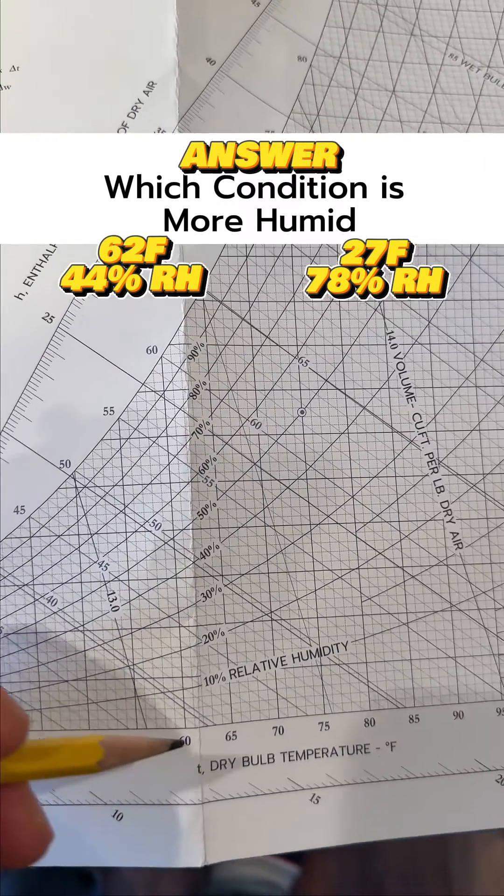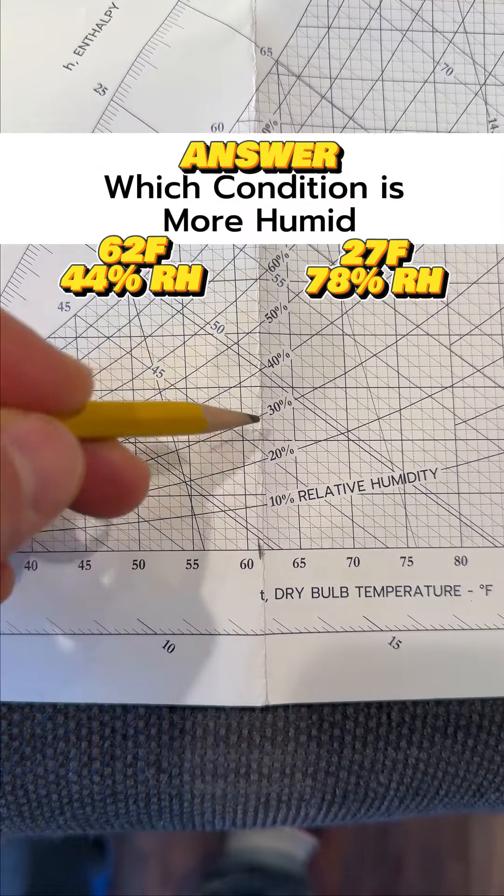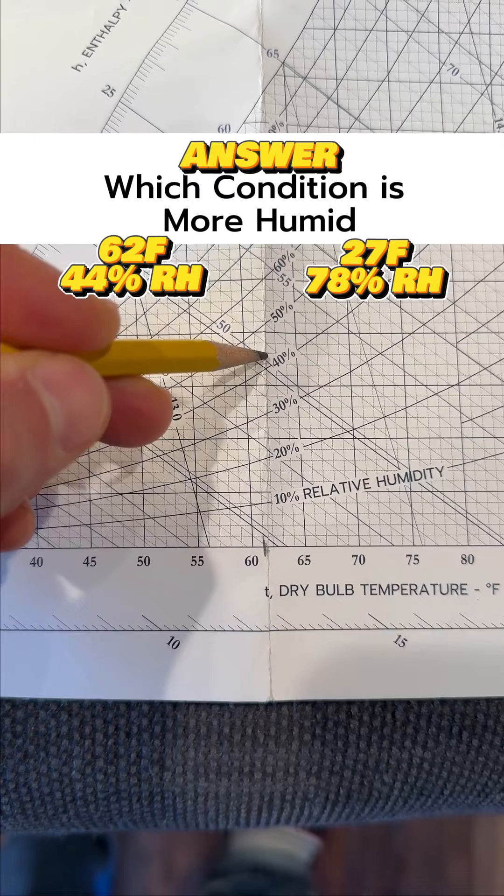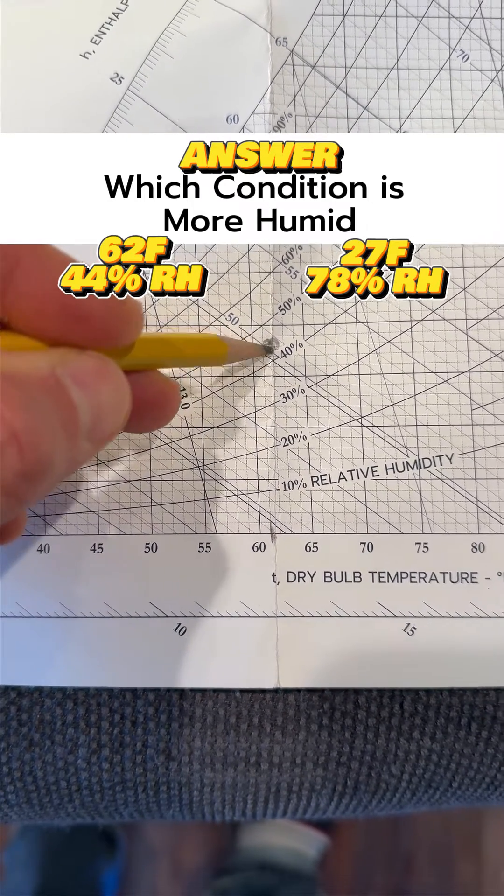So the first condition, the dry bulb is 62, which is approximately right here. I'm just going to swag this, not get very precise. And we go up to 44% RH, which is probably right here. So I'll make a dot there.